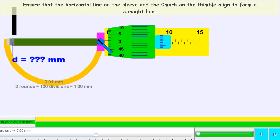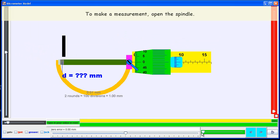Ensure that the horizontal line on the sleeve and the zero mark of the thimble align to form a straight line. That means it will be the zero reading.